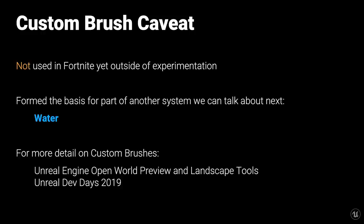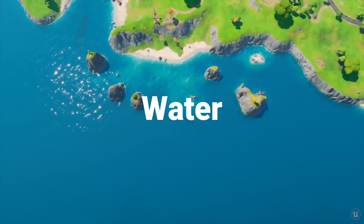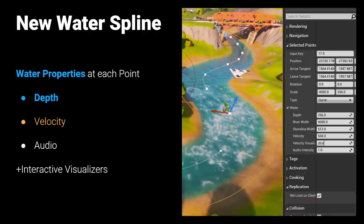Water was one of the biggest new additions to Fortnite in Chapter 2, and Epic is bringing the set of water editing and interaction tools to Unreal Engine in 4.26 as a unified water system. The water system lets you define lakes, rivers, oceans, and islands using splines, and includes gameplay interaction and fluid simulation. At the core is a new water spline type that allows customizable water properties to be edited at each spline point with interactive visualization gizmos — adjusting things like depth, width, velocity, and audio parameters at each point.